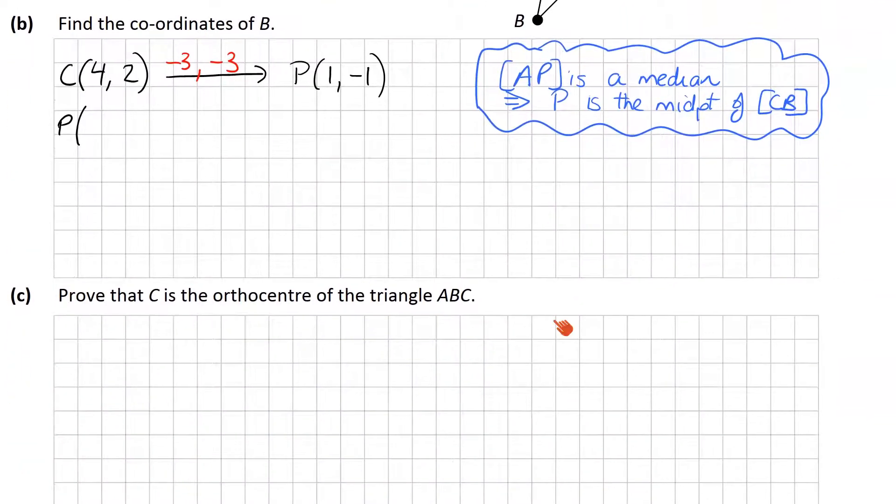Okay, so again, starting at (1, -1), using the exact same steps, we're going to get that, sorry not P, but B this time is 1 minus 3, which is minus 2. And minus 1 minus 3 to be minus 4. So B is (-2, -4).